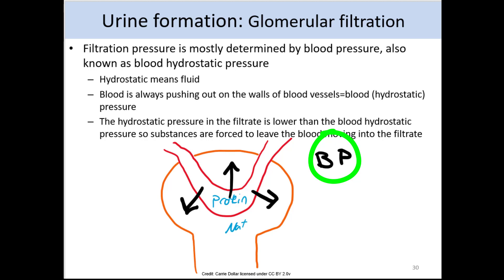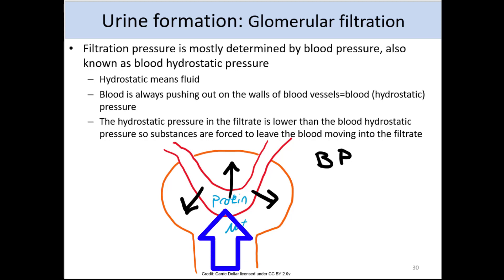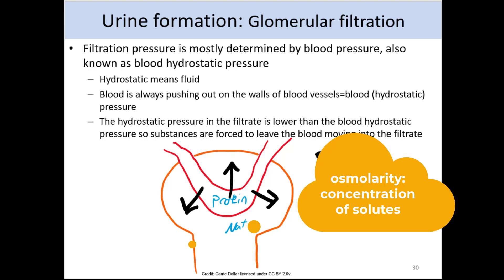If there are huge problems with proteins in the blood — for example, if there's way too much protein — then the osmotic pressure drawing fluids into the glomerulus could become higher than the blood pressure, in which case no filtration will occur. That's one reason why it's bad to have high protein or high osmolarity within the glomerulus.